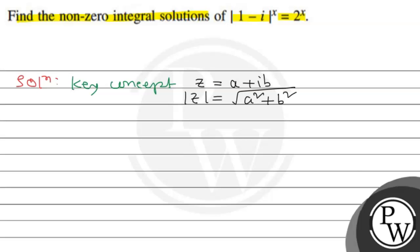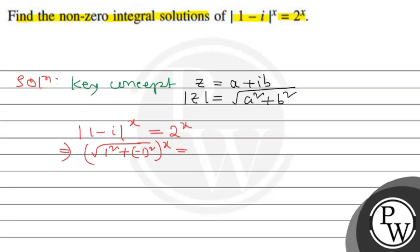What does the question ask? Modulus of (1 minus i) whole to the power x equals 2 to the power x. Therefore, modulus of (1 minus i) equals square root of 1 squared plus (minus 1) squared, and this whole raised to the power x equals 2 to the power x.